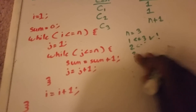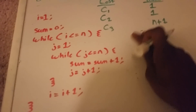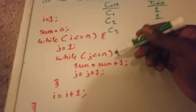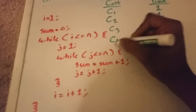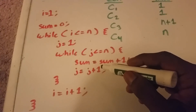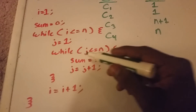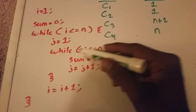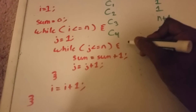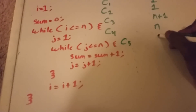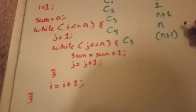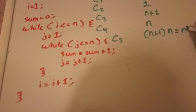Next we have the statement j equals one, and it's run within the outer loop which only runs n times, so it takes some constant amount of time. Next we have the inner while loop, which runs n plus one times because j equals one and increases by one each time. It takes some constant time C5 times (n plus one), but this while loop is within the outer while loop that runs n times, so we multiply by n and get n squared plus n.